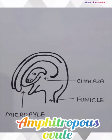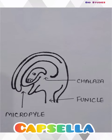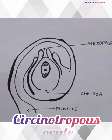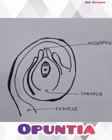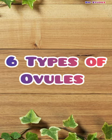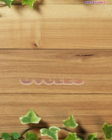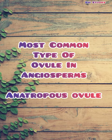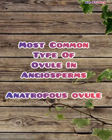The fifth type is amphitropous ovule — example is Capsella. The sixth type is circinotropous ovule — example is Opuntia. So basically there are six types of ovules, and the most common type of ovule in angiosperms is the anatropous ovule.